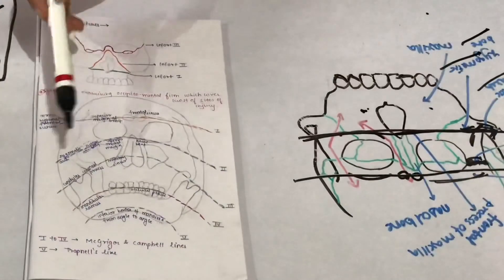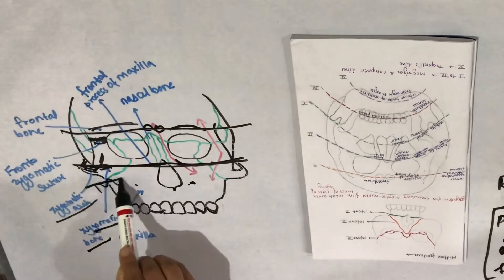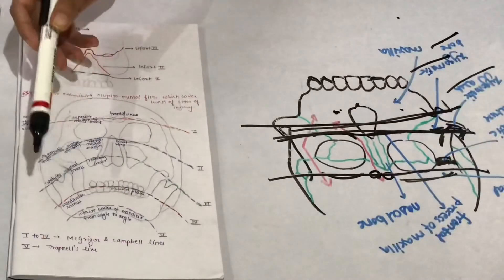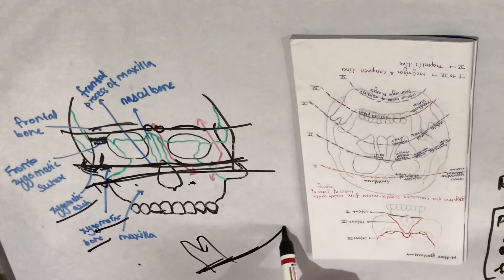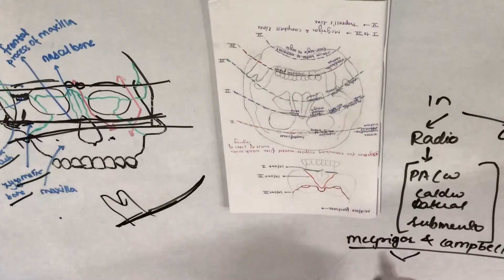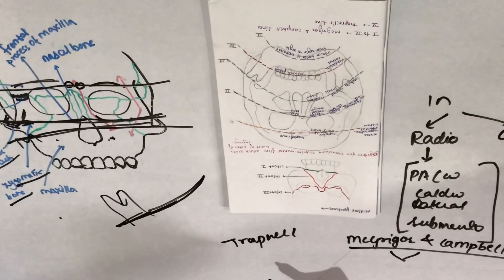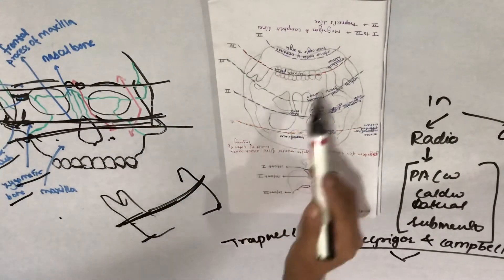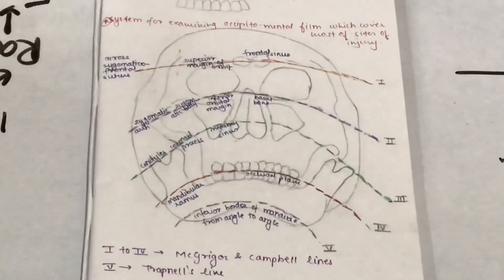The third line passes from the condyle and coronoid of the mandible through the maxillary sinus. The fourth line passes from the mandibular ramus through the occlusal plane. A fifth line, introduced by Trapnell, crosses the inferior border of the mandible from angle to angle. These five lines together help detect fractures accurately on the occipito-mental radiograph.